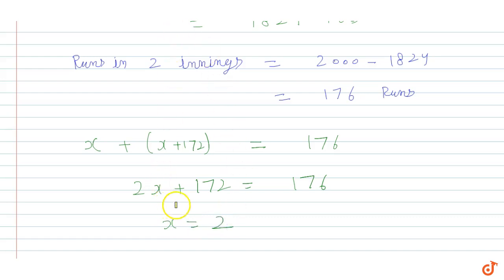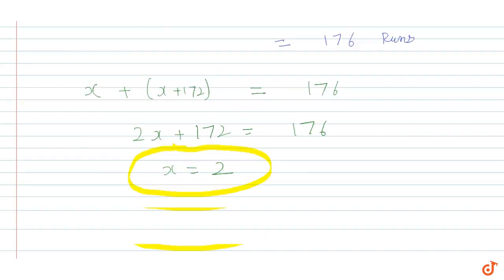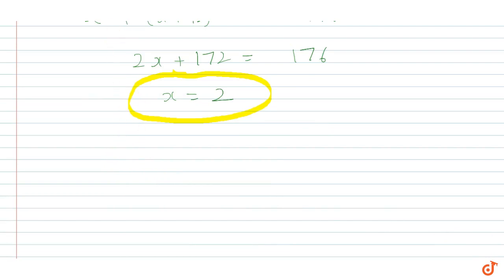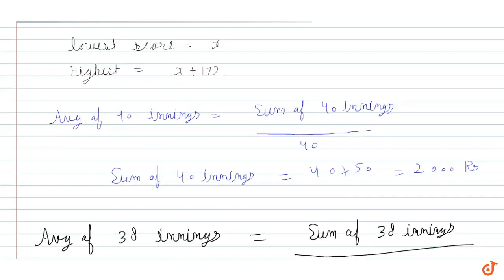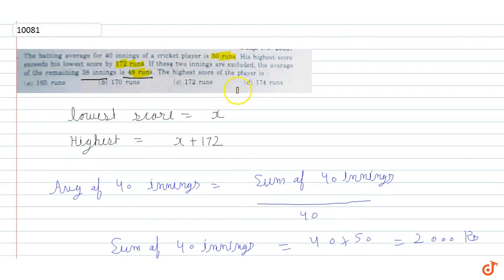So the lowest score is equal to 2. Since we assumed lowest score is equal to x, the highest score is x plus 172. Therefore, highest score is equal to 2 plus 172, which is equal to 174 runs. So this is the answer for this question. The highest score by the batsman is 174 runs. The correct answer for this question is option D, 174 runs.